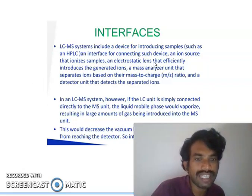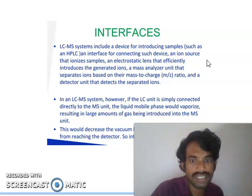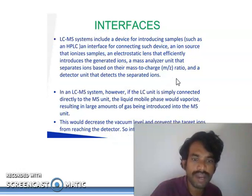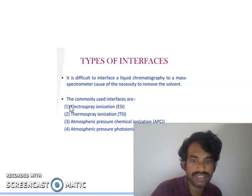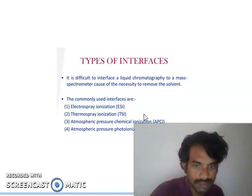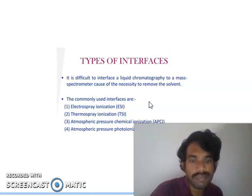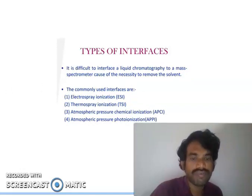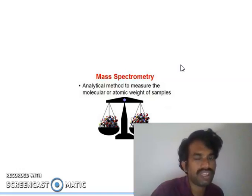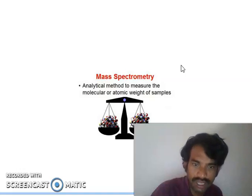The LC-MS system includes a device for introducing samples such as the HPLC. The interface connects that device to the ion source which ionizes samples. Electrostatic lenses guide the generated ions into the mass analyzer unit, which separates ions based on their mass-to-charge ratio, and then the detection unit detects the separated ions. Types of interface include electrospray ionization, thermospray ionization, atmospheric pressure chemical ionization, and atmospheric pressure photoionization.